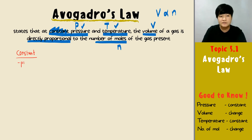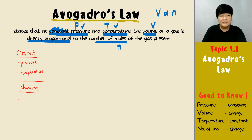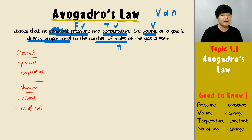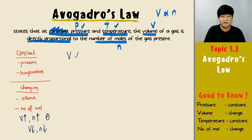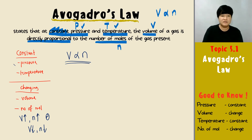The two variables that remain constant are pressure and temperature. The variables that will be changing are the volume of the gas and also the number of moles, and they are directly proportional — when the volume increases, the number of moles increases; when the volume decreases, the number of moles decreases.